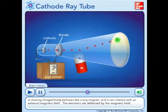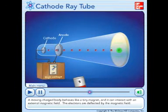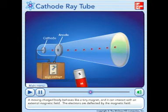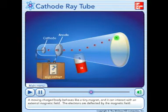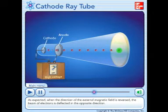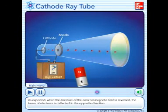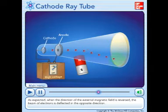A moving charged body behaves like a tiny magnet and it can interact with an external magnetic field. The electrons are deflected by the magnetic field. As expected, when the direction of the external magnetic field is reversed, the beam of electrons is deflected in the opposite direction.